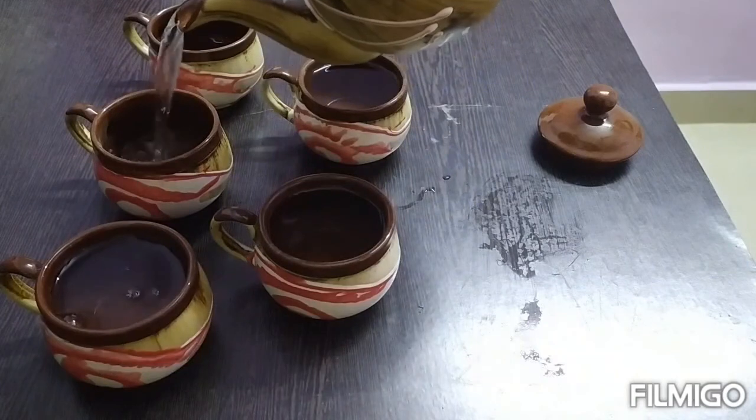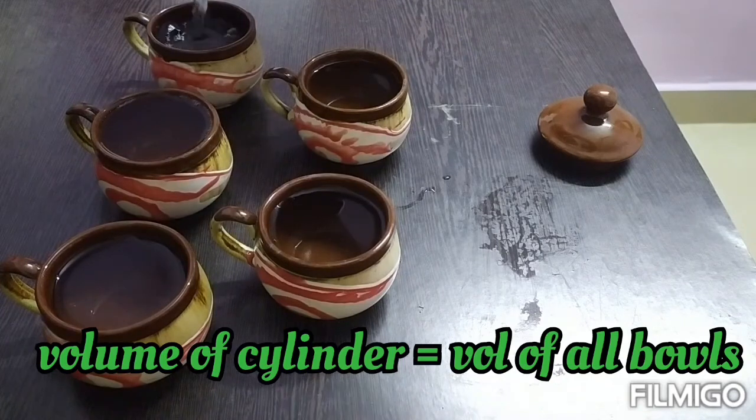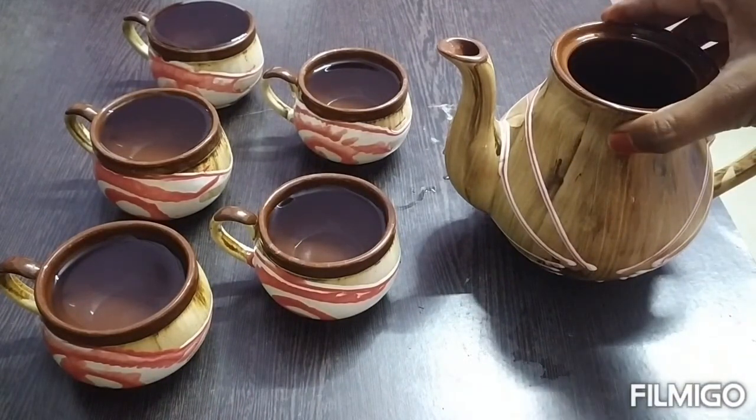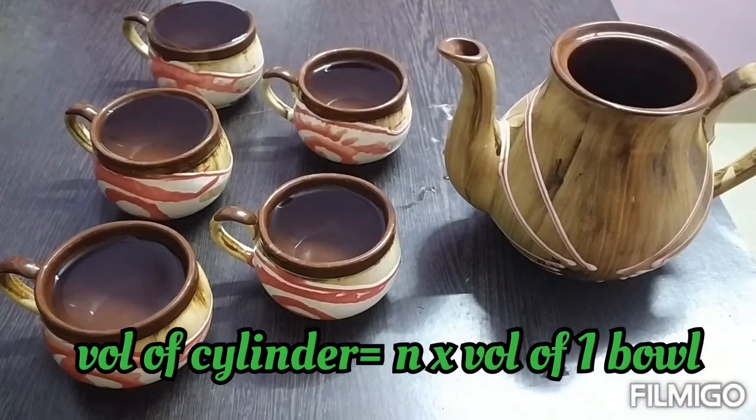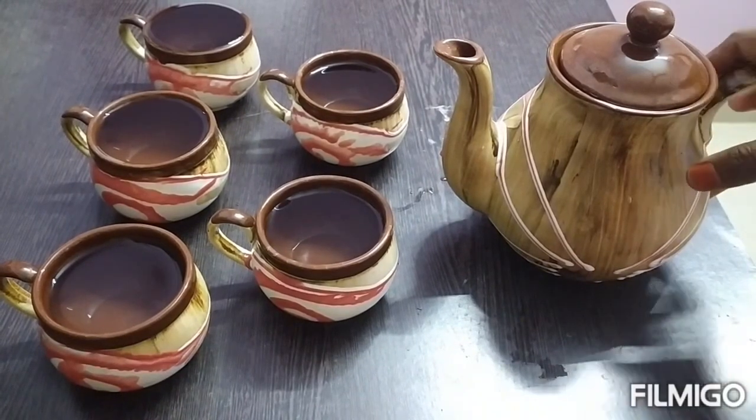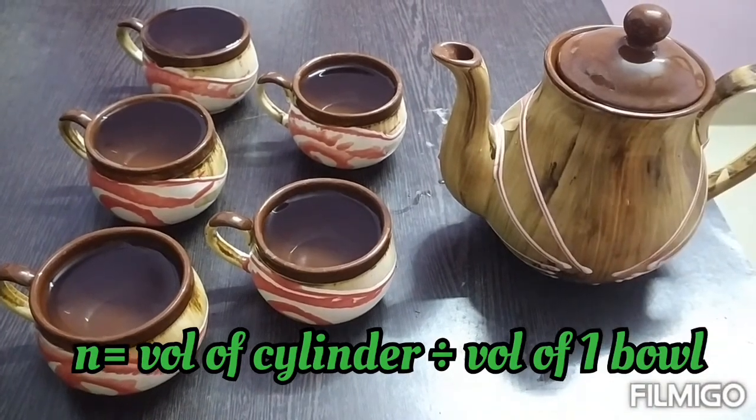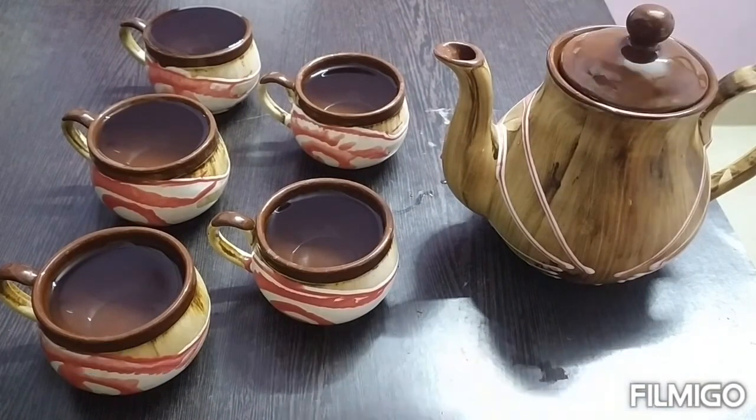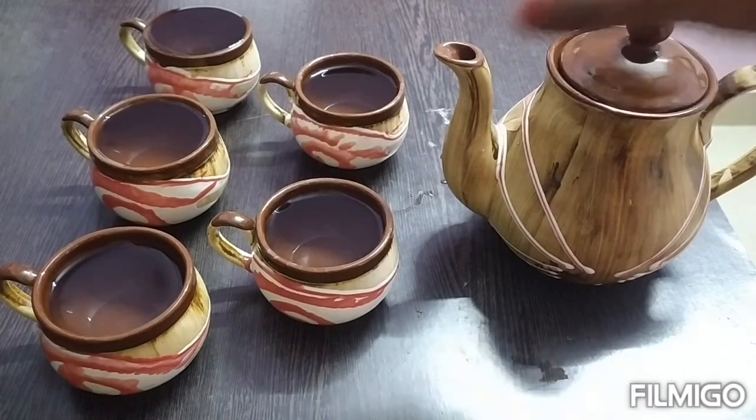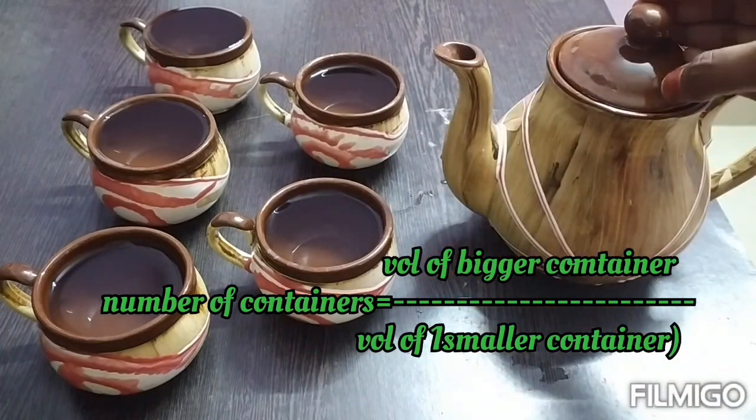But the number of containers differ. So volume of cylinder will be equal to volume of all the bowls. We don't know how many bowls. To find any unknown value, we will use the letter N. Since it is the matter of numbers, we are going to use the letter N. So volume of cylinder will be equal to N times the volume of one bowl, because all the bowls are of equal volume. Therefore N will be equal to volume of the cylinder divided by volume of one bowl. Whatever be the container - either it is a cylinder or bowl or any cone - the same concept will be applicable. So number of containers will be equal to volume of the bigger container divided by volume of one smaller container.